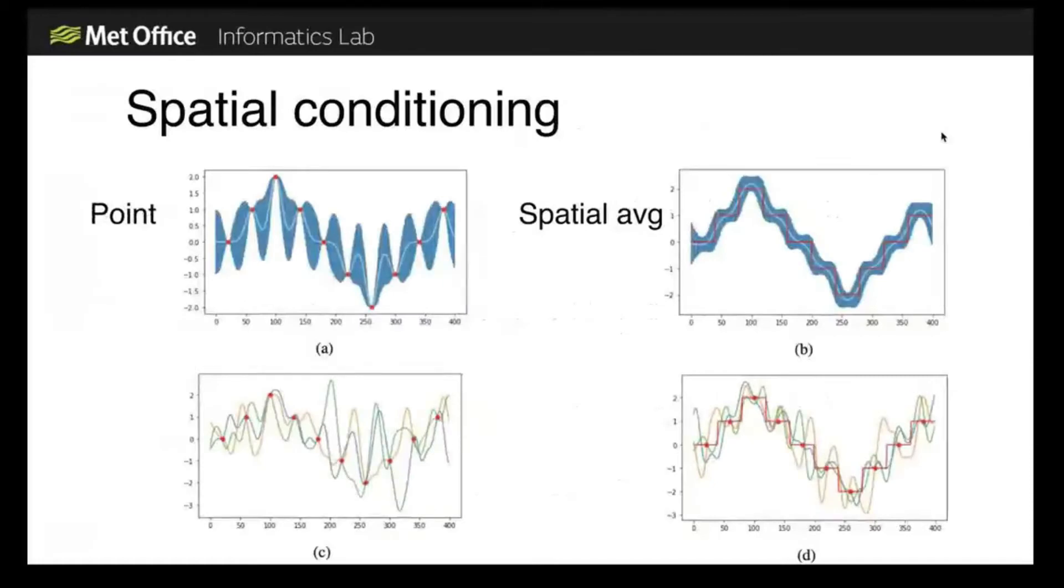To give you some example of the difference between this and conditioning on particular points, I've shown a simple one-dimensional example. On the left, I've shown conditioning on some point values and then drawing samples from that posterior distribution below. You can see that at each point, each of the samples goes through the point that we've conditioned on, as expected. On the right, I've used the same data but instead of treating them as point observations, treated them as spatial averages. The posterior distribution is somewhat different - it doesn't collapse down to points but has a more even variance.